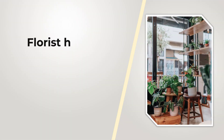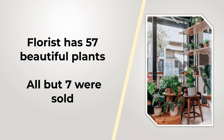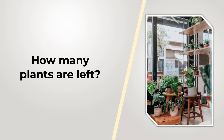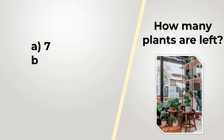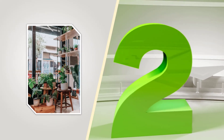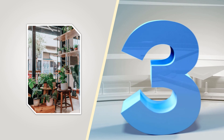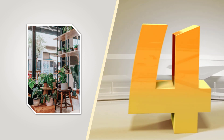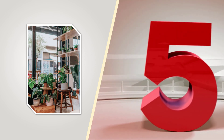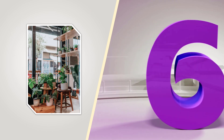Here's a challenging question you might frequently see on the test. A florist has 57 beautiful plants. All but seven were sold. How many plants are left? The choices are: A) 7, B) 57, C) 64, D) 50. Take a close look and give yourself 10 to 15 seconds. Let's continue to get to the correct solution together.